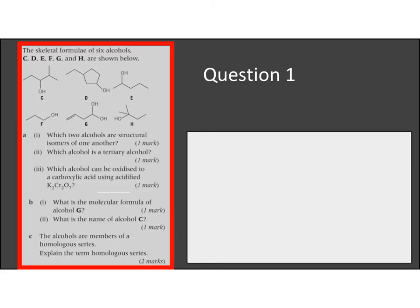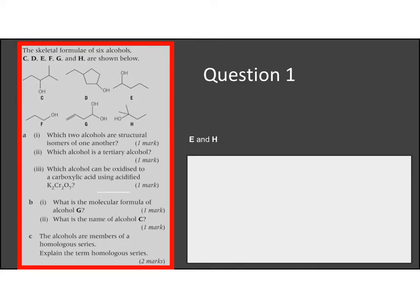So we've got some skeletal formula there, six alcohols. And we need to figure out which are structural isomers of each other. If you have a look, you will see it's actually E and H. If you have a quick check of E which is here and of H which is here, you can see they have the same molecular formula but a different structure.